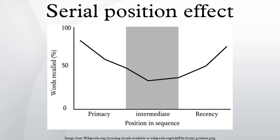In an experiment using this technique, participants were asked to recite out loud the items that came to mind. In this way, the experimenter was able to see that participants would repeat earlier items more than items in the middle of the list, thus rehearsing them more frequently and having a better recall of the prime items than the middle items later on.